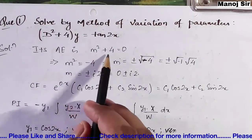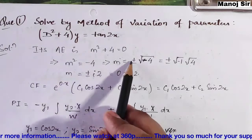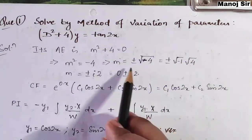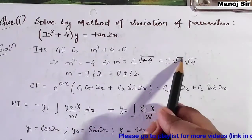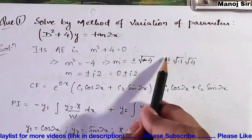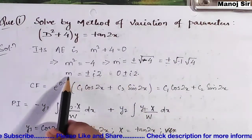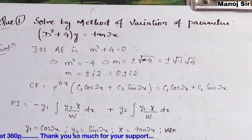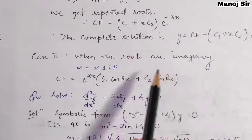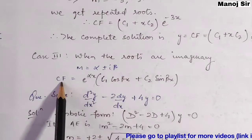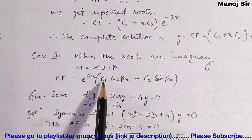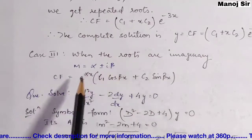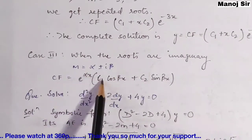From m² + 4 = 0, we get m² = −4, so m = ±√(−4) = ±√(−1)·√4 = ±2i. This can be written as 0 ± 2i, giving α = 0 and β = 2. When roots are imaginary — m = α ± iβ — the complementary function is e^(αx)(c1·cosβx + c2·sinβx).